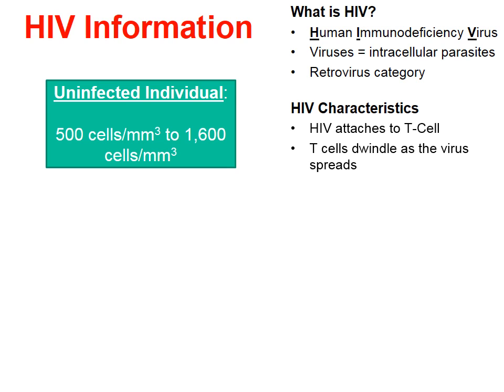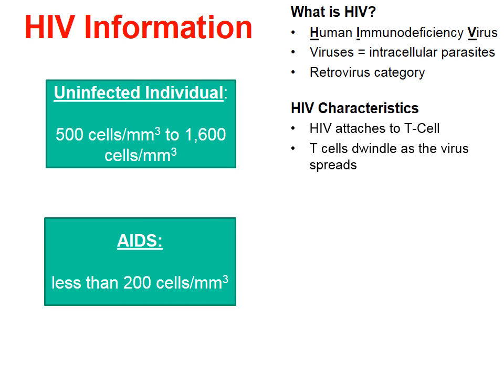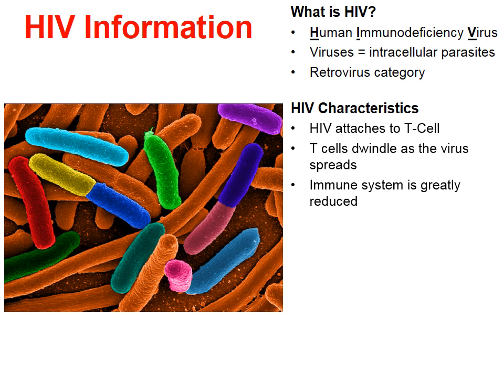As time passes, the HIV virus actually destroys these T cells and the amount of T cells the person has begins to dwindle. An uninfected individual will have anywhere from 500 to 1600 T cells in every cubic millimeter of blood. But when a person is diagnosed with the disease known as AIDS, they have less than 200 T cells per cubic millimeter of blood. Eventually our immune system becomes compromised, and opportunistic infections such as other viruses and bacteria could make the person very ill, to the point where it could take their life.